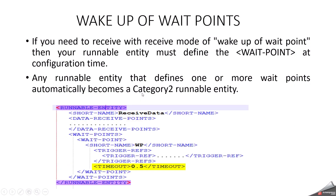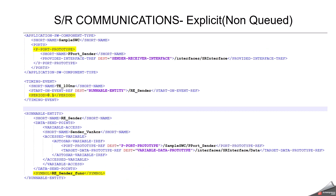Wake up of wait points. If you need to receive data with receive mode of wake up of wait point, then you have to configure a runnable entity that must define a wait point at configuration time. Most projects do not support or prefer wake up of wait points, but it depends on the application and requirement. If your requirement says to use wake up of wait points, you can configure it. Any runnable entity that defines one or more wait points automatically becomes a category 2 runnable entity — that is important to keep in mind.